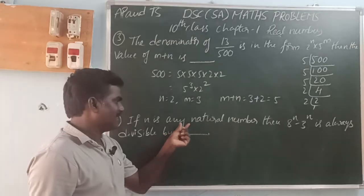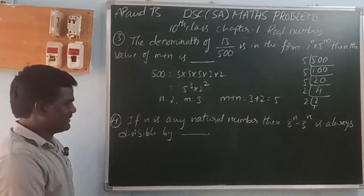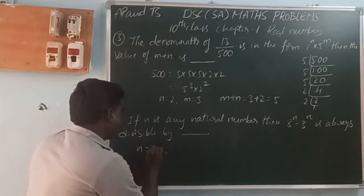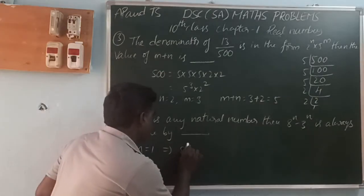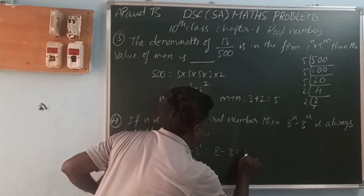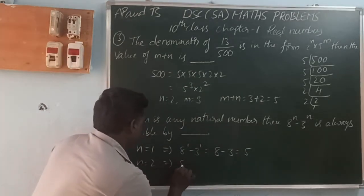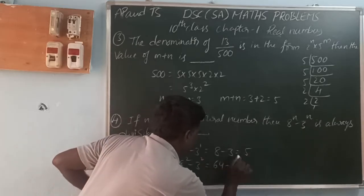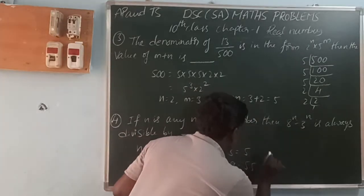Next: if n is any natural number, then 8 power n minus 3 power n is always divisible by what? For n equals 1: 8 power 1 minus 3 power 1 equals 8 minus 3 equals 5. For n equals 2: 8 squared minus 3 squared equals 64 minus 9 equals 55.